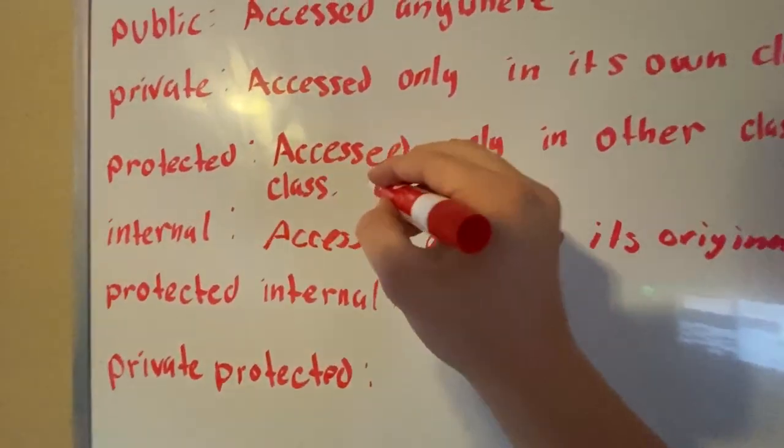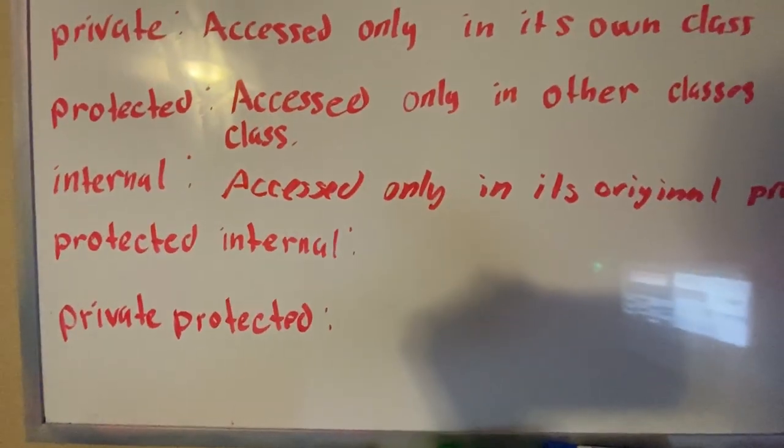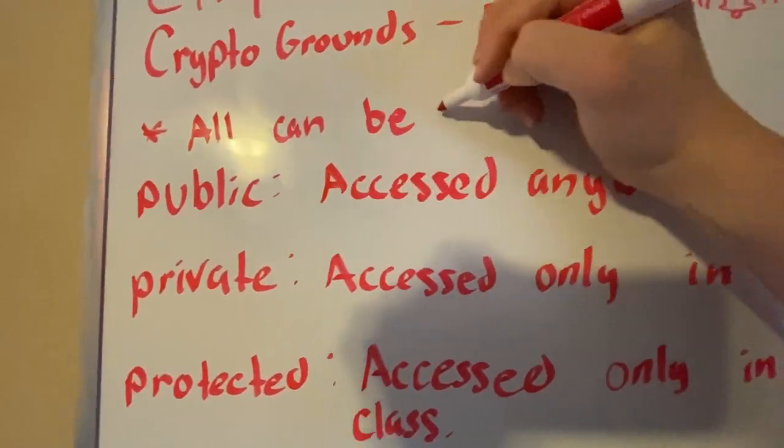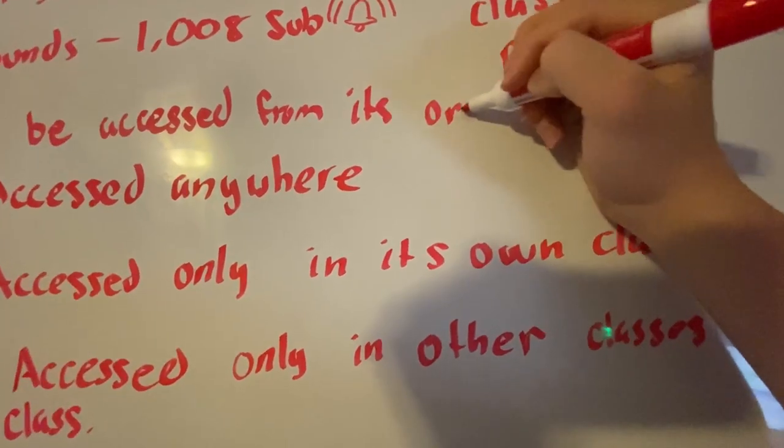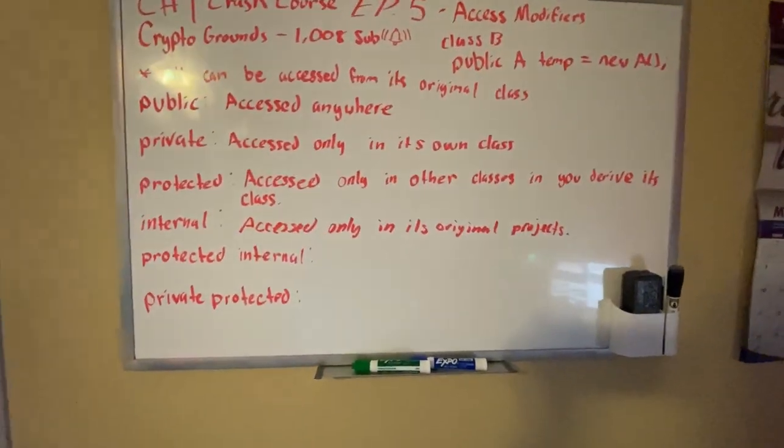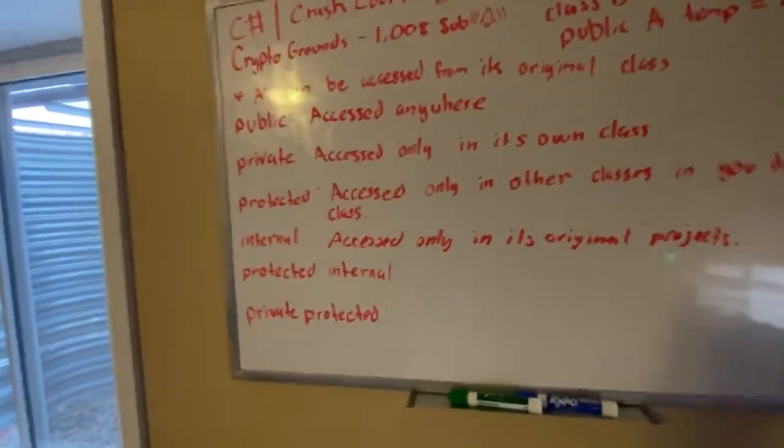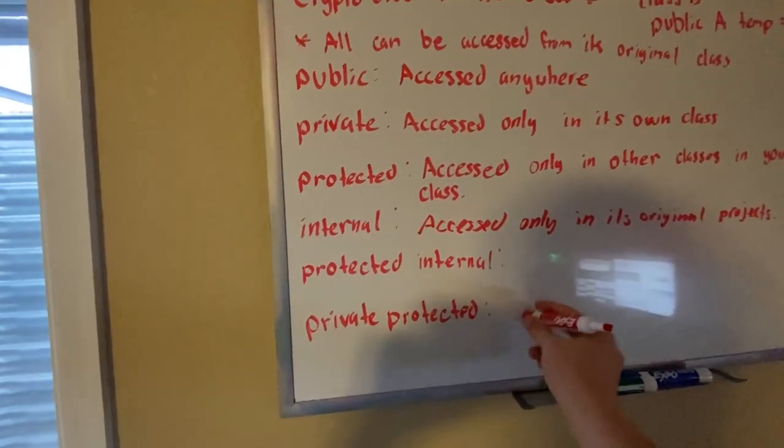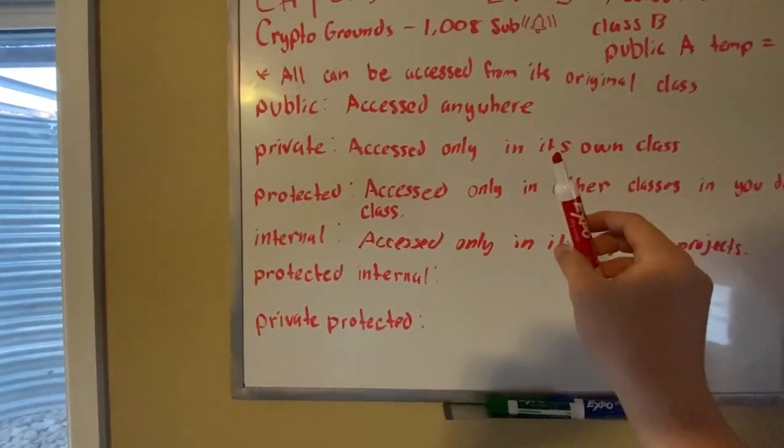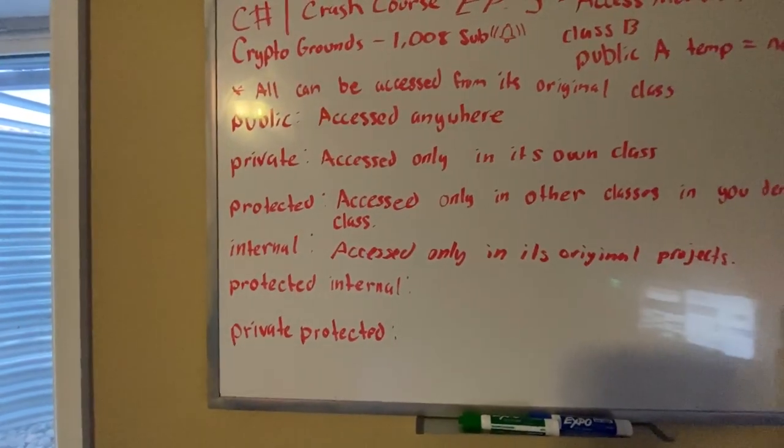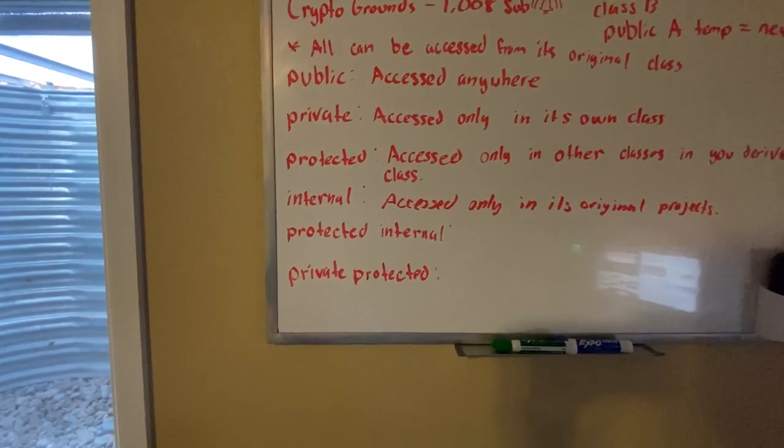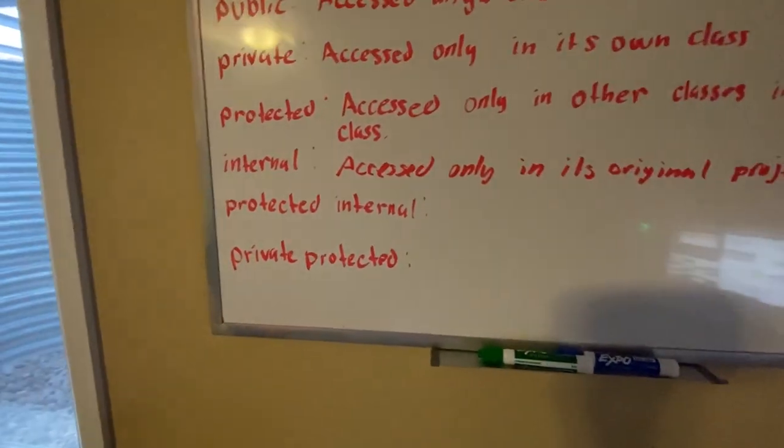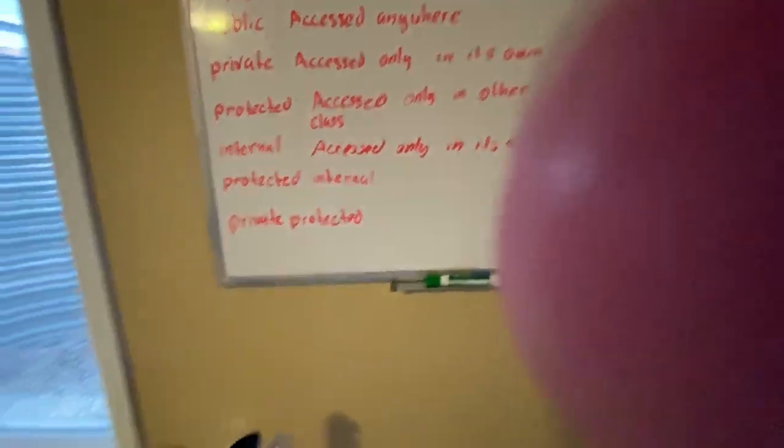Also for protected, you can also add because it can obviously be accessed in its own class. All of these can be accessed in its own class. Let me put a note right here: all can be accessed from its original class. This goes the same thing for classes. All of these can be accessed in your namespace or your project or your assembly, whatever you want to call it. Just remember all these can be accessed inside of its original location. These are kind of like Google Drive, kind of giving someone a sharing permission to access your folder. You got view, edit, comments. It's kind of like this, like giving variables or classes certain permissions.